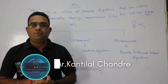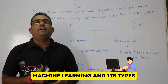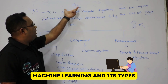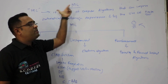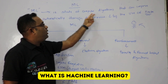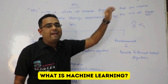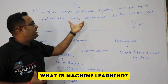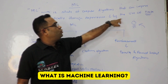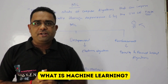In today's session, we are going to discuss about machine learning and types of machine learning. So what is machine learning? Machine learning is nothing but the study of computer algorithms that can automatically improve through experience through the use of data, according to Wikipedia.